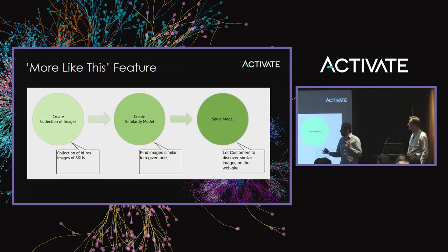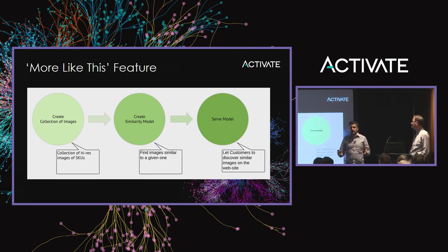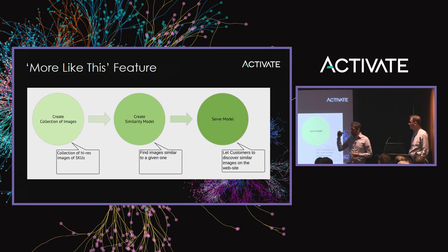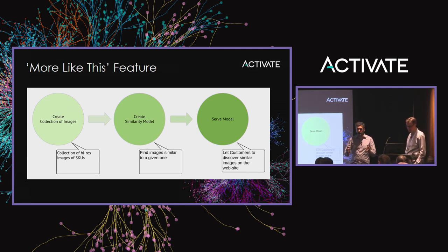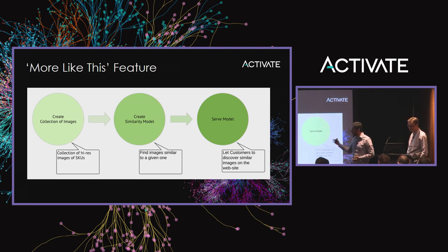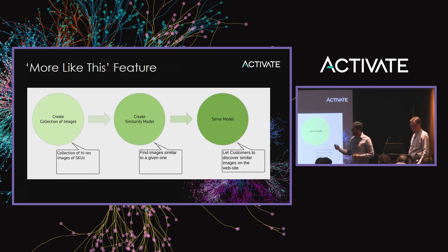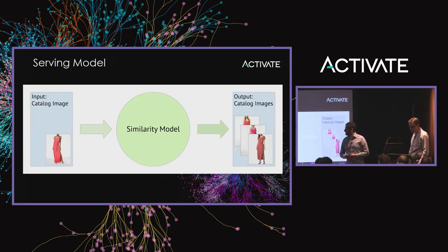If you think about this feature as a system, we can present it as three big functional blocks: we need to create a collection of images, find the similarities within that collection, and then have a part of the system serving that similarity model to customers.